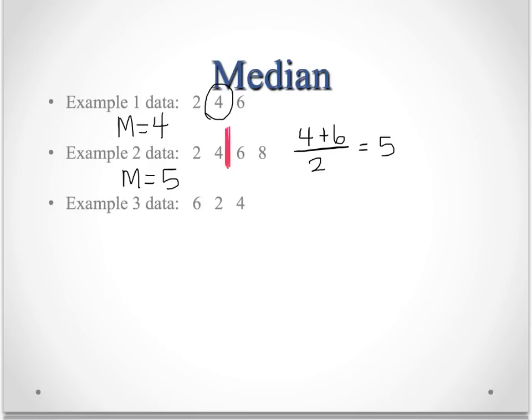Example 3 data, we look at it and it's not in ascending order. Now your temptation is to say there's three values, but it's not the middle one until you put it in ascending order.